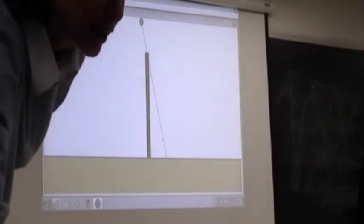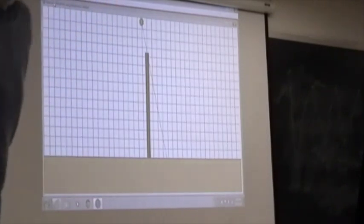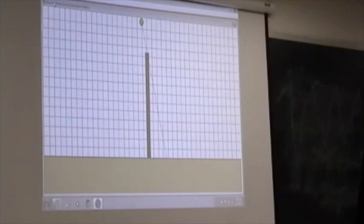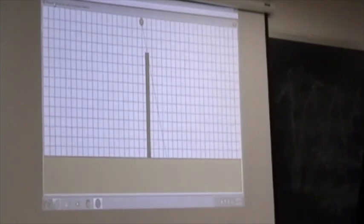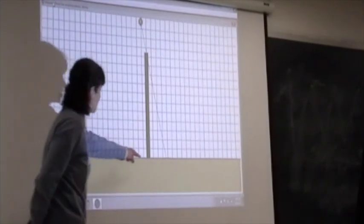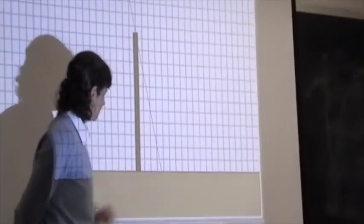You can show a grid. And to find the angle, what you need to do is count the number of squares representing the height of the stick and count the number of squares to find the length of the shadow. Here's the height of your stick. Here's the length of your shadow.